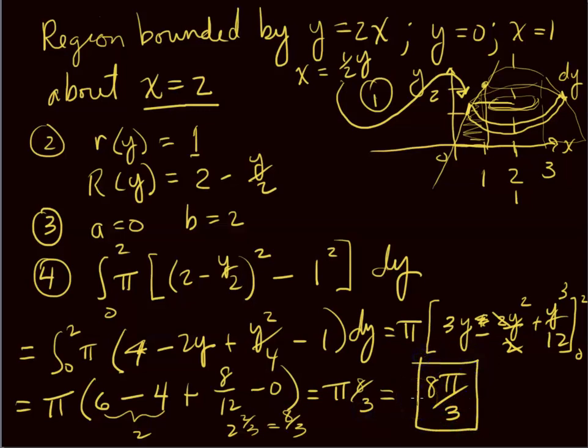Expanding: (2 − y/2)² = 4 − 2y + y²/4, then subtract 1, giving 3 − 2y + y²/4. The antiderivative is 3y − y²·(1) + y³/12, evaluated from 0 to 2. Plugging in 2: 6 − 4 + 8/12 = 2 + 2/3 = 8/3. So the volume is 8π/3. The key here is being careful with the radius when not revolving about a coordinate axis.